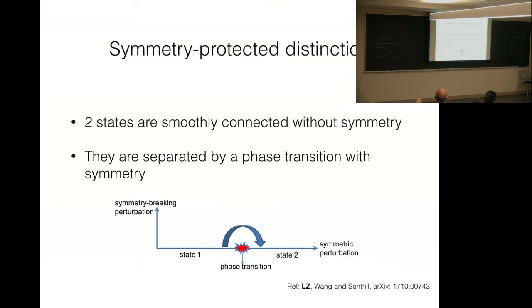This question is important because of the following concept. Symmetry protects the distinctions between phases of matter. Suppose we have two states, state one and state two. We want to go from state one to state two by tuning parameters of the Hamiltonian. It can happen that if we restrict our Hamiltonian to satisfy some symmetry, then to go from state one to state two, I have to go across a phase transition. However, if I allow the Hamiltonian to break symmetry, then I can avoid the phase transition. Then, if this is the case, we say these two states have symmetry-protective distinctions, namely, they are identical in the absence of symmetry and distinct in the presence of symmetry.